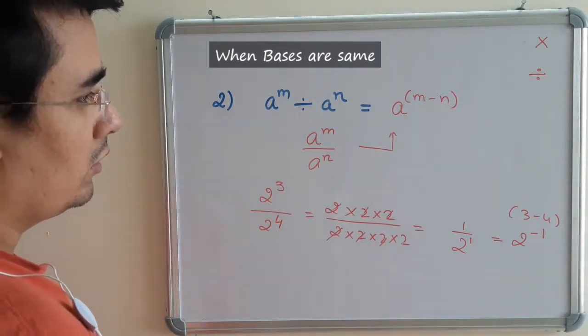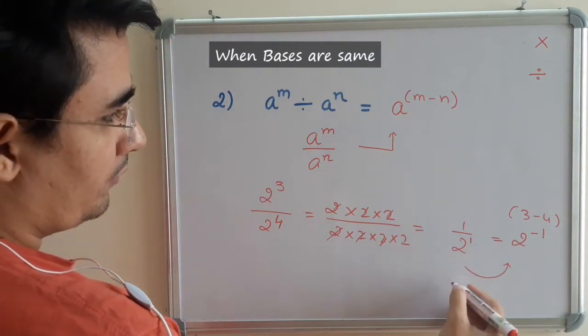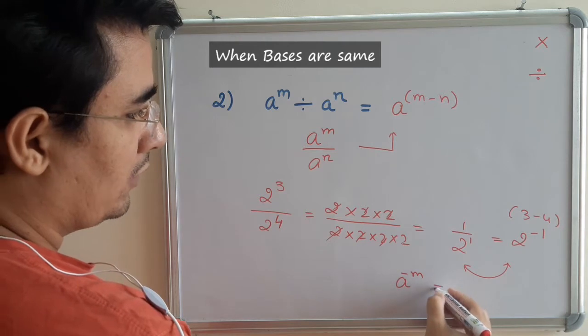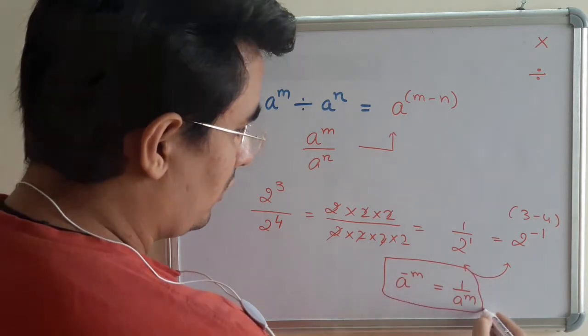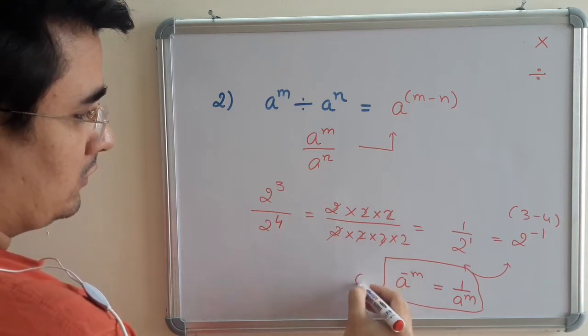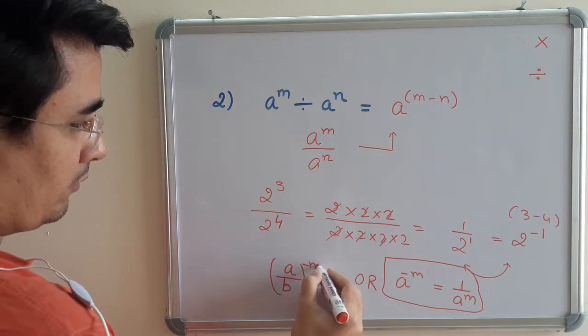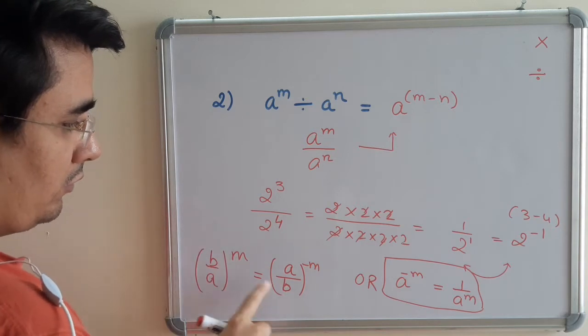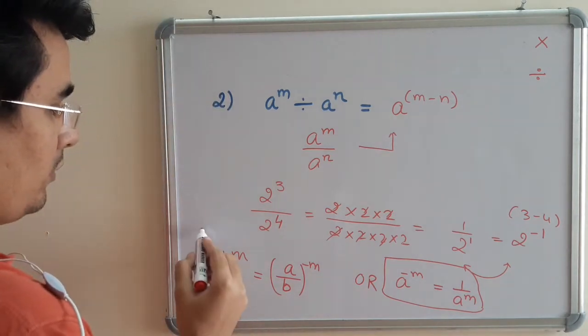So the law becomes a^(m-n). This is the second law. From here we can understand one more law. If the power is negative, a^(-m) can be written as 1 upon a^m. Negative power can be removed by doing the reciprocal of the base. This property can also be understood as (a/b)^(-m) equals (b/a)^m. This is property number 3.